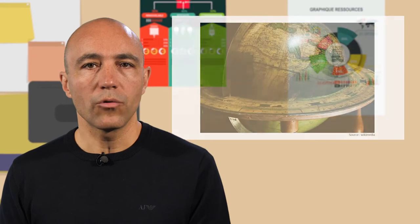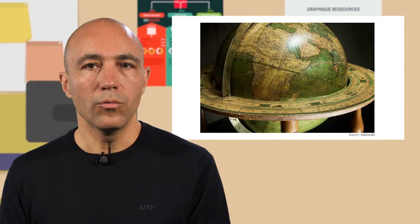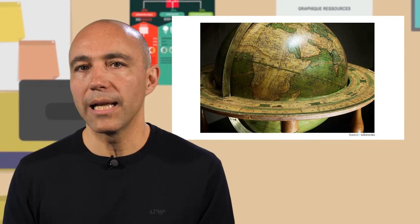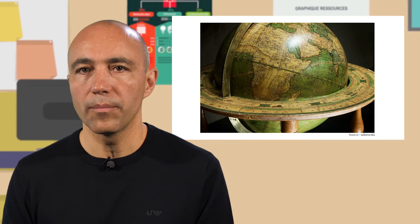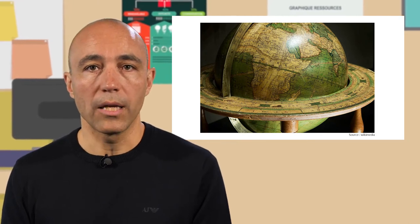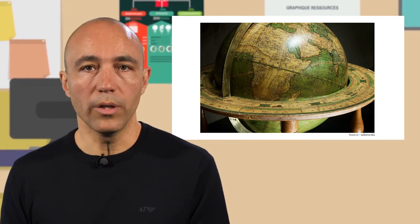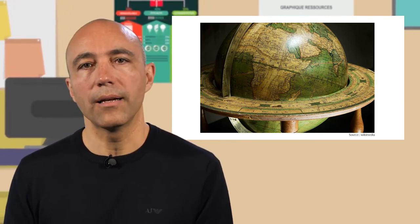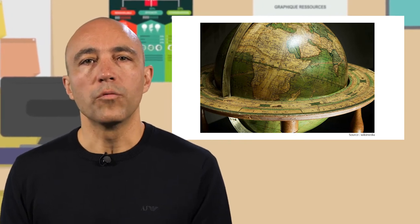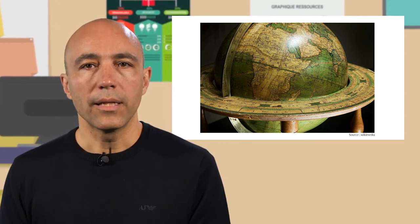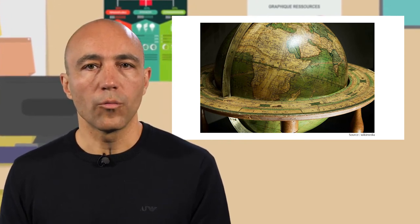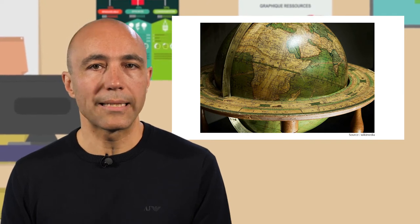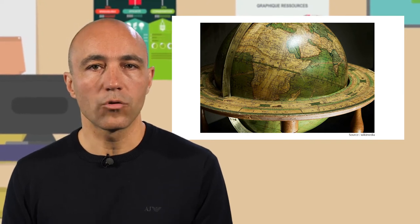Idem dans cette représentation de la Terre, où ne sont représentés ni les nuages, ni les montagnes, ni l'aplatissement des pôles. Du reste, les fuseaux horaires et les méridiens, qui eux y figurent, n'ont pas d'existence réelle. Comme vous pouvez le constater, les deux modèles que nous venons de présenter sont uniquement valables dans des domaines de validité restreints qui leur sont propres.